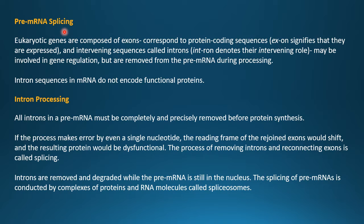Eukaryotic genes are composed of exons, which correspond to protein-coding sequences — 'ex' signifying they are expressed on translation — and intervening sequences called introns. Introns denote an intervening role; they may be involved in some gene regulation but are removed from the pre-mRNA during processing. Intron sequences in mRNA do not code for any functional proteins, so the cell removes them to minimize unnecessary workload.